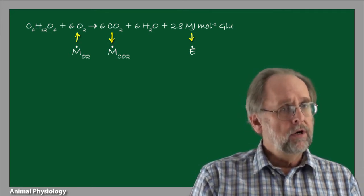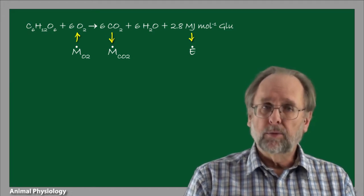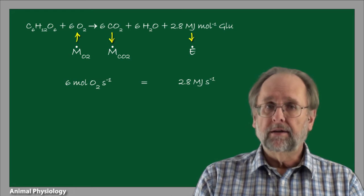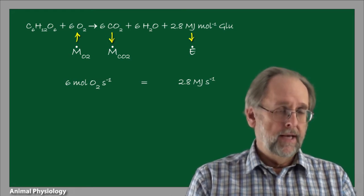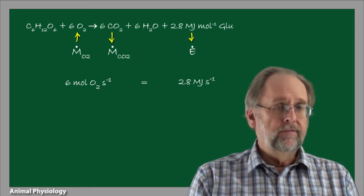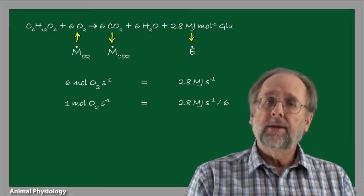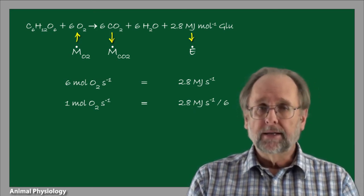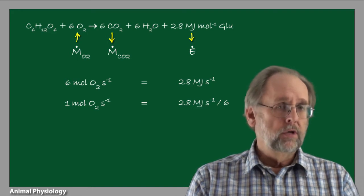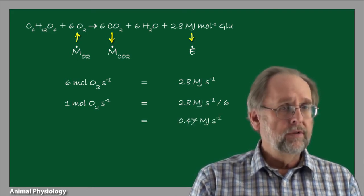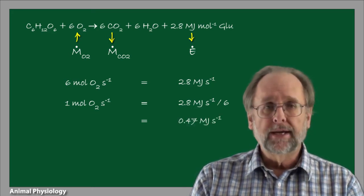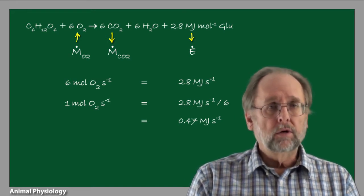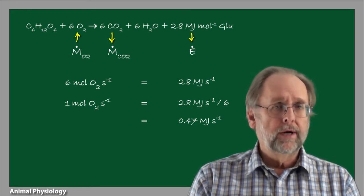For carbohydrates, for every six moles of oxygen consumed per second, 2.8 megajoules per second of energy will be released. For every mole of oxygen consumed, the energy production rate will be 2.8 megajoules per second divided by six, or about 0.47 megajoules per second — that is to say, 0.47 megawatts, or 470 kilowatts.